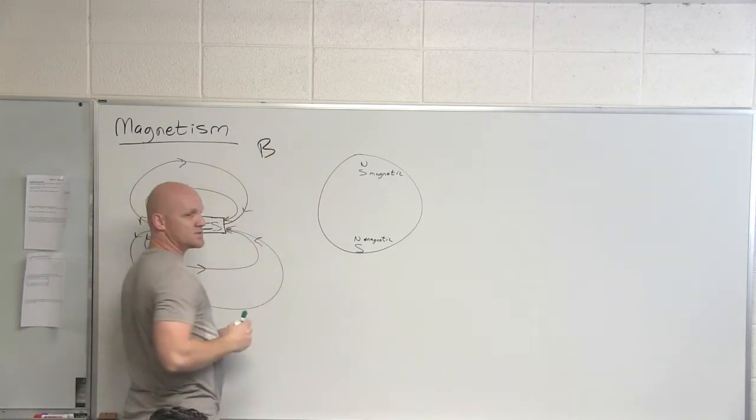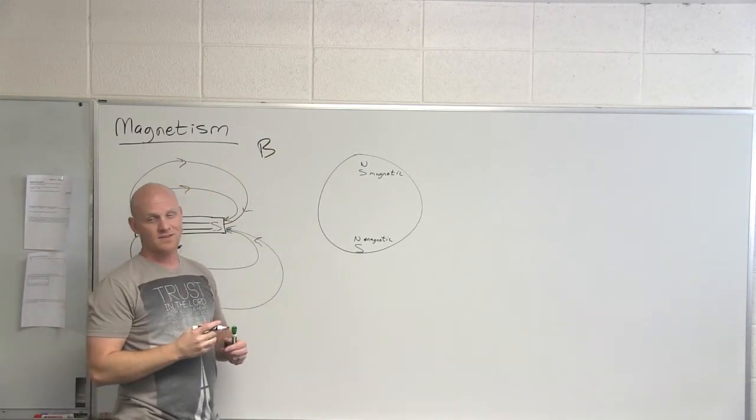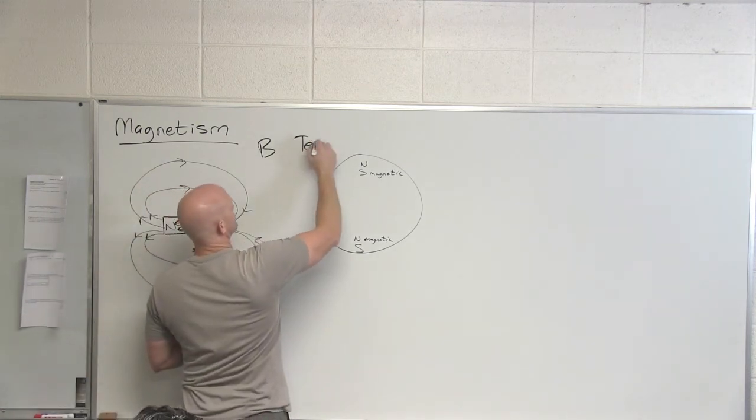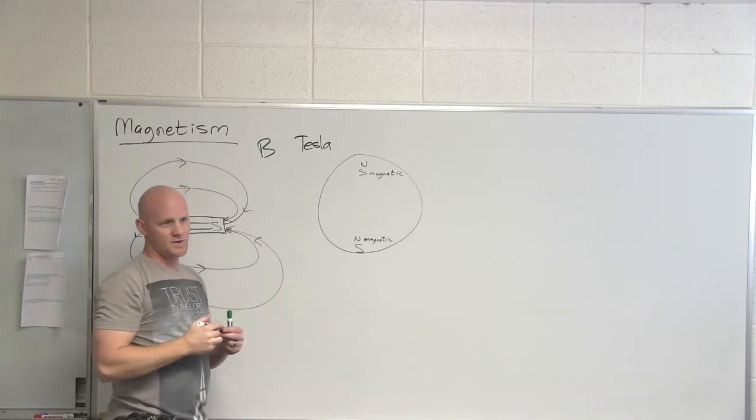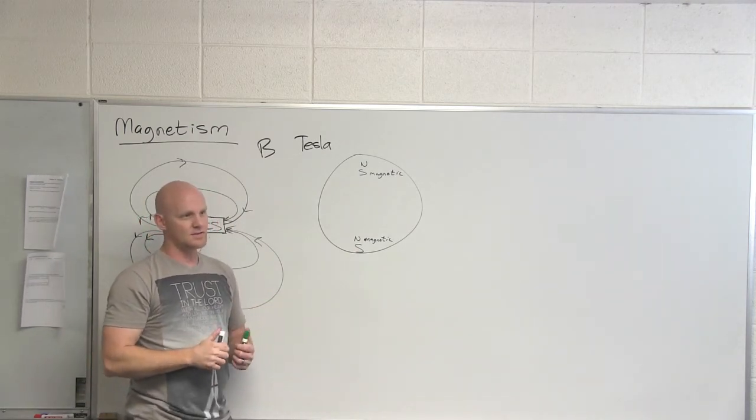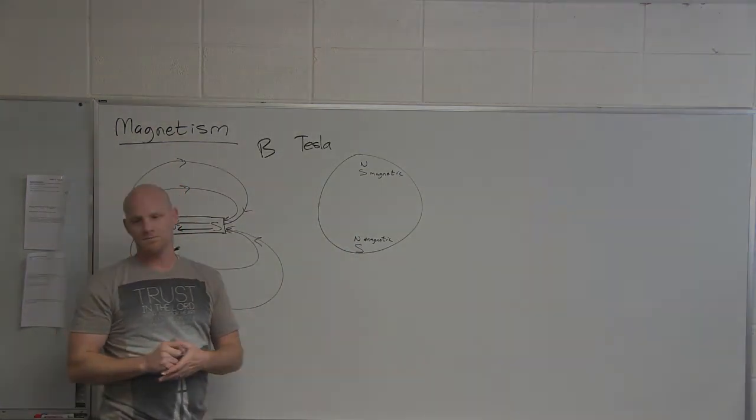Magnetic field, we use the symbol B to represent the magnetic field, and the SI unit is Tesla. Tesla is the SI unit, but you might also see Gauss sometimes, which is not the SI unit.